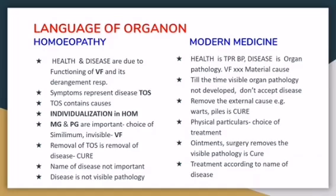In modern medicine, physical particulars are the choice of treatment. In homeopathy, mental generals and physical generals are important indicators for the choice of similimum — they represent the invisible vital force. Removal of totality of symptoms is removal of disease and is cure, as per the homeopathic concept. In modern medicine, surgery removes the visible pathology. The name of disease is not important in homeopathy because disease classification is done on a symptoms basis — it is not nosological.